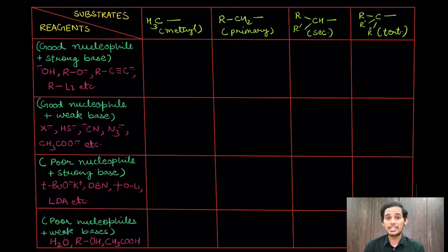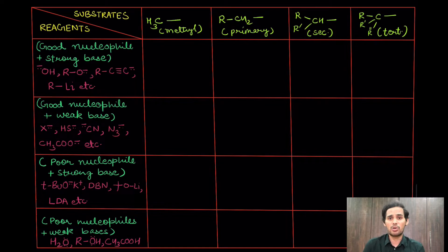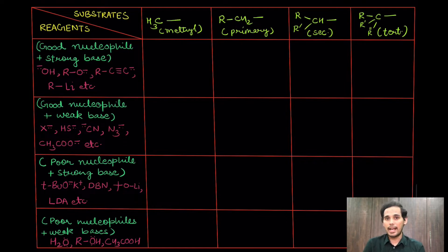The third category — a very important one — is good bases and strong bases but very poor nucleophiles. These are essentially sterically hindered reagents with bulky groups. Because of those bulky groups, even if they have good electron density, they become poor nucleophiles. The fourth category is poor base as well as poor nucleophile — solvents like water, alcohol, and acetic acid, which can neither act as strong bases nor good nucleophiles. For substrates, we have methyl, other primary substrates, secondary substrates, and tertiary substrates.